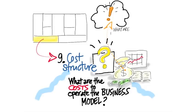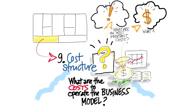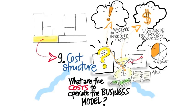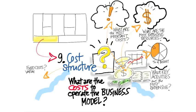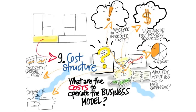The other things are: what are my most important costs? Are there resources from the resources part of the business model canvas? Are there activities that are most expensive? Did I have to do something with my suppliers? I really want to understand what's the cost structure to operate the business — what are my fixed costs, what are my variable costs, what are my most expensive resources and activities?